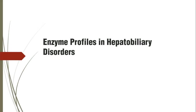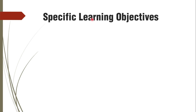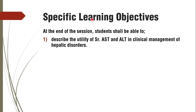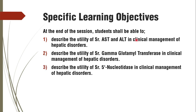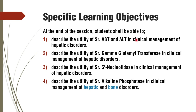Coming to the enzyme profiles in hepatobiliary disorders, we will first see the specific learning objectives. At the end of the session, students shall be able to: describe the utility of AST and ALT in clinical management of hepatic disorders; describe the utility of serum gamma glutamyl transferase; describe the utility of serum 5' nucleotidase; and describe the utility of serum alkaline phosphatase in clinical management of hepatic and bone disorders.